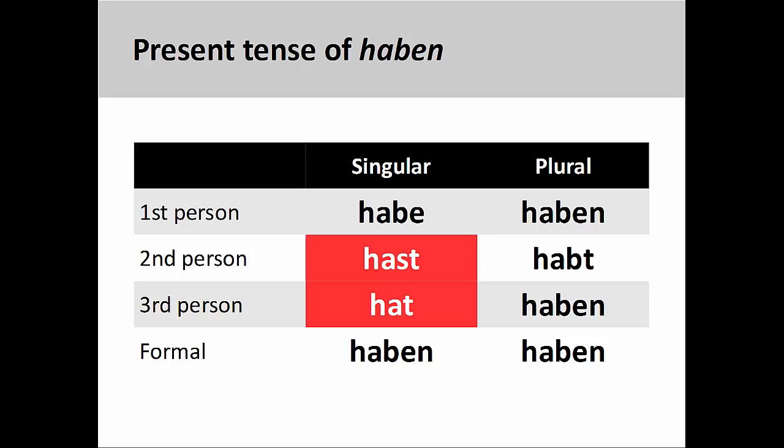You will recall from an earlier presentation that some irregular and strong verbs have unusual second- and third-person singular forms in the present tense. One verb we looked at was haben, to have, which retains the consonant letter b throughout most of the present tense conjugation pattern. This letter is dropped, however, in the second- and third-person singular. You may want to review that presentation before continuing with this one.